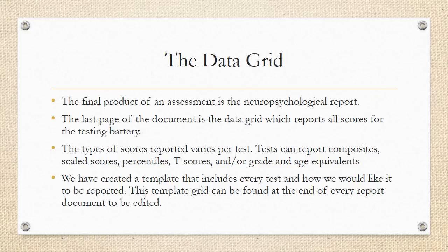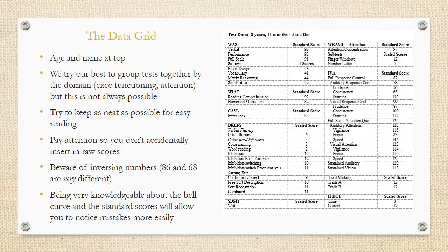Ah, the data grid. You're going to become very familiar with the data grid before the end of your internship with us. So the final product of an assessment is the neuropsych report. On the last page of the document is the data grid which reports all scores for the testing battery. The types of scores reported varies per test. Tests can report composites, scaled scores, percentiles, t-scores, and or grade or age equivalencies. We have created a template that includes every test and how we would like it to be reported. This template grid can be found at the end of every report document to be edited.